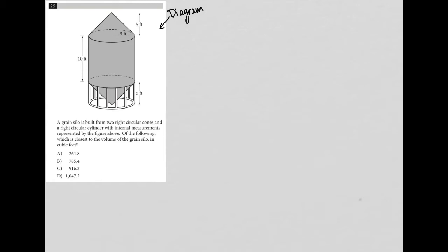The question says a grain silo is built from two right circular cones. We see a cone up here on top and a cone down here on bottom with internal measurements represented by the figure above. The measurements look like the height is five feet, and the radius is also five feet for the cones. Of the following, which is closest to the volume of the grain silo in cubic feet?